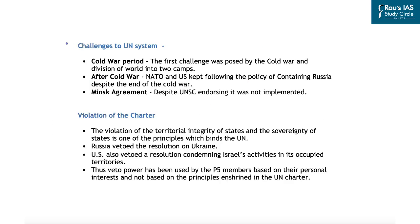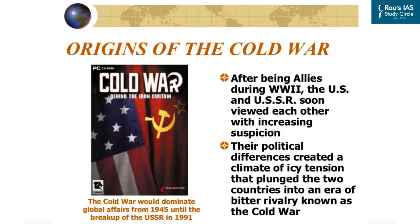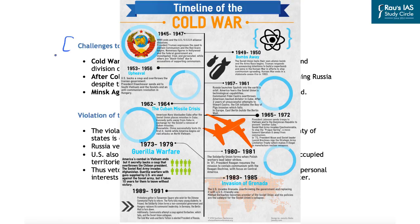If you look at the functioning and challenges faced by the UN system, these were exposed right after the Second World War and the creation of the United Nations. During the Cold War period, the first challenge was posed by the confrontation between the USSR and the USA, which was called the Cold War. Rivalries and alliances were created based on ideologies — the USA-led capitalist system versus the erstwhile USSR-led communist system.